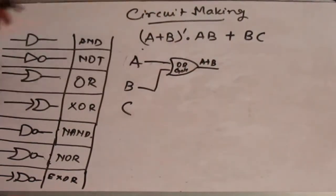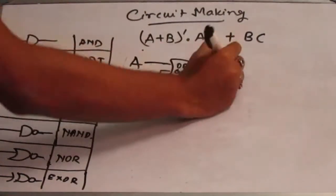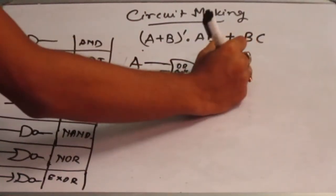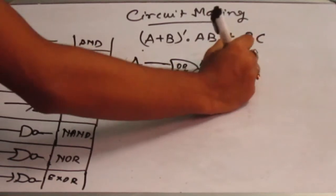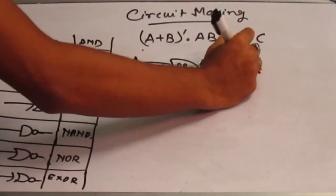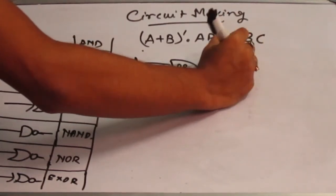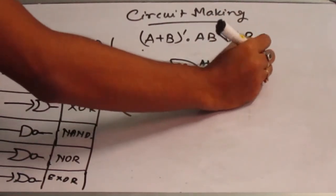Now there is a complement, which is the NOT. So we are going to pass it through a NOT gate. That will give us A plus B, whole complement.